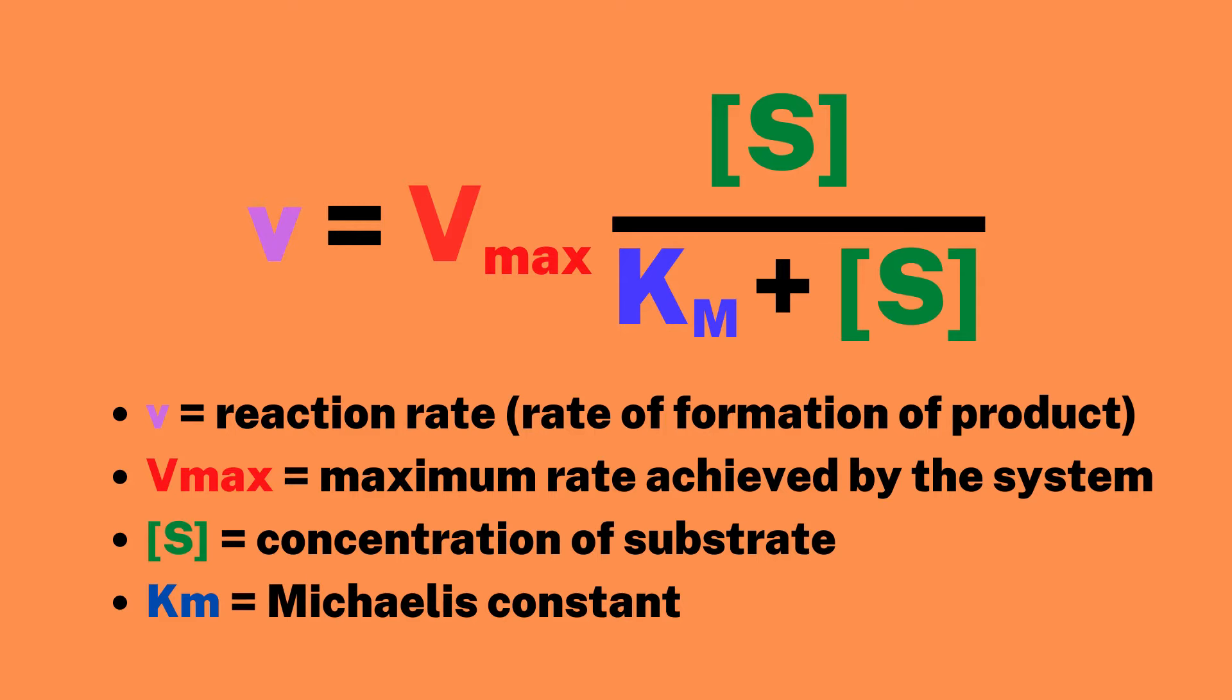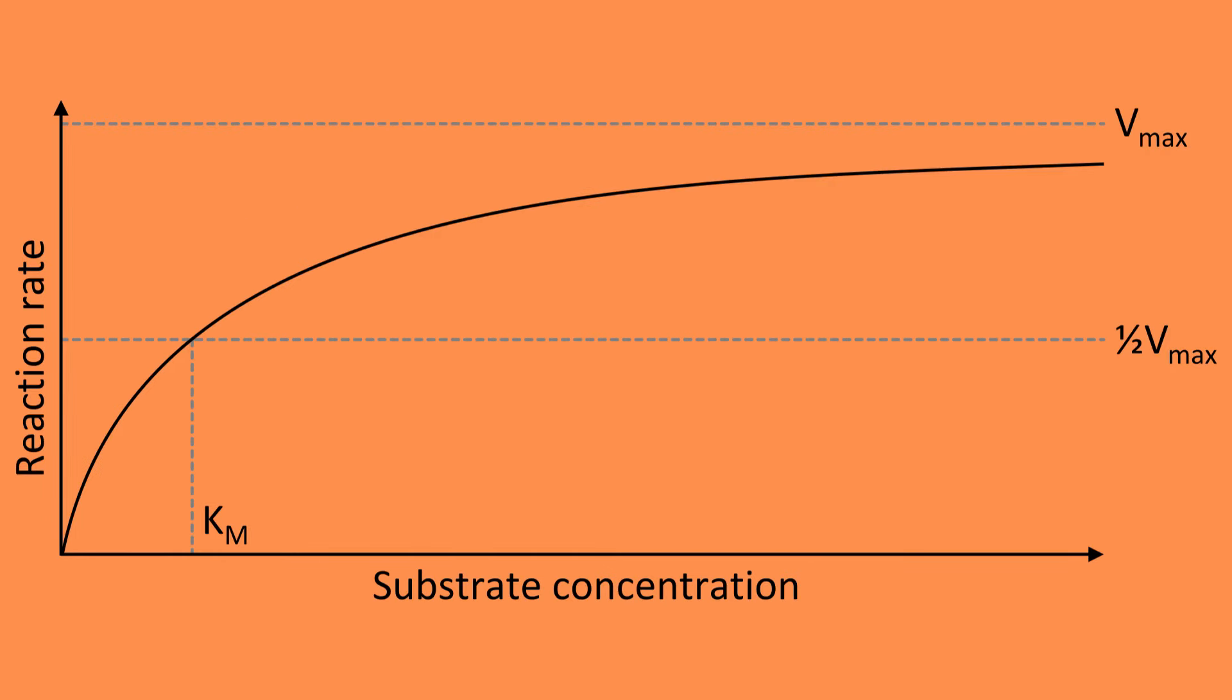S is the concentration of substrate and Km is the Michaelis constant, which is a measure of the affinity of the enzyme for the substrate. It is equal to the substrate concentration at which the enzyme is working at half of its maximum velocity.